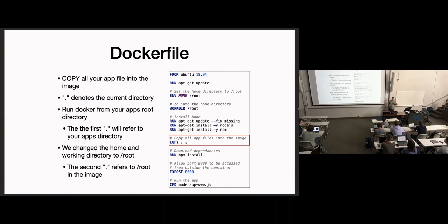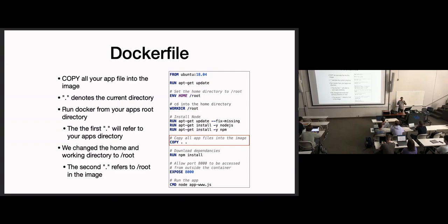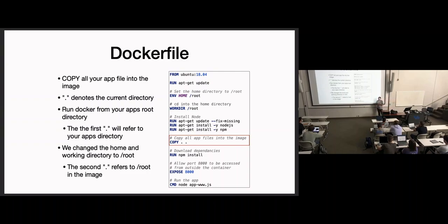I'm saying COPY dot dot here. The first dot is shorthand for the current working directory — we're going to run these Dockerfiles from our project directory, so dot is the project directory. The second dot is going to be /root inside the container. So dot dot specifies the current directory on my host machine into the current working directory of the container. The Dockerfile should always be in the root directory of your project. If you're using dot dot like this, that implies it's going to be in the root directory.